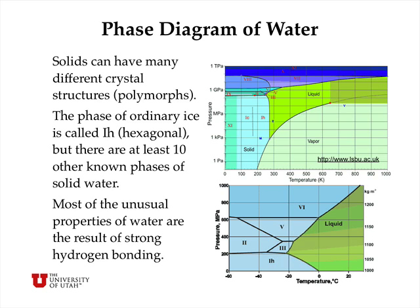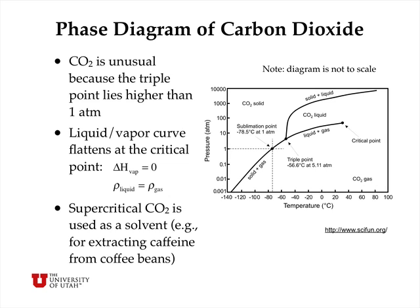Let's take a more detailed look at the phase diagram for water. Solids can have many different crystal structures or polymorphs, whereas liquids and gases can only have one. The ordinary phase of ice is called ice 1h, a hexagonal crystal structure, but there are at least 10 other known phases of solid water. Some of the most unusual properties of water result from strong hydrogen bonding between molecules. The phase diagram for carbon dioxide is also unusual because the triple point lies higher than one atmosphere, so at one atmosphere pressure, CO2 can be a solid below minus 78.5 Celsius or a gas above that.